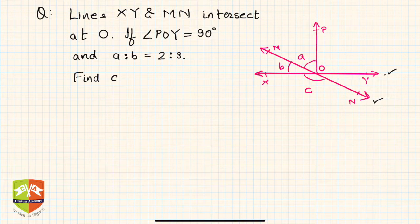It's given that angle POY is 90 degrees. And this angle is a and this angle is b, so a is to b is 2 is to 3, and you have to find out c.